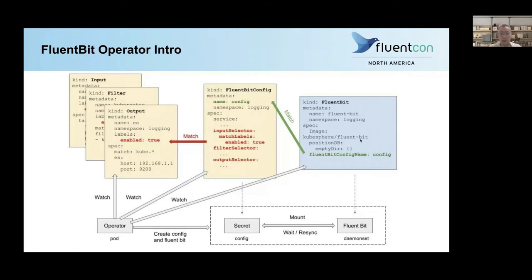Once the plugins are selected, it will generate the FluentBit config into a secret, and the secret will be mounted into each FluentBit pod. The FluentBit CRD is used to define the entire FluentBit DaemonSet — its position DB and which configuration to use. The operator will watch for all the CRDs, and whenever any of these CRDs changes, it will reconcile and generate a new FluentBit configuration.